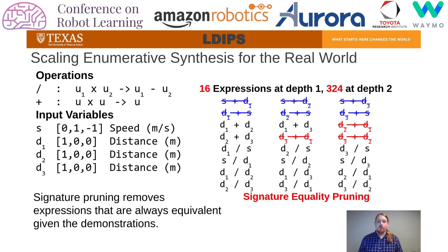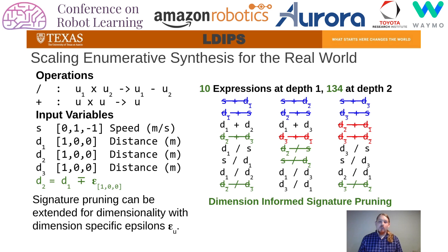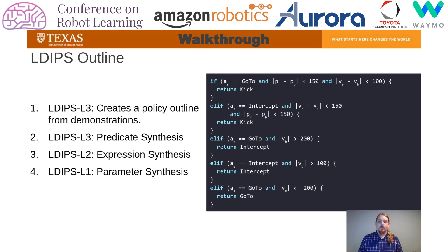We also extend signature pruning for reducing the search space. By default, signature pruning allows us to rule out expressions that are always equivalent to an earlier expression, no matter the demonstrations. We extend these signatures with dimension-specific epsilons to allow floating point equality, which allows us to prune out expressions that are indistinguishable for a given demonstration set from real robot data.